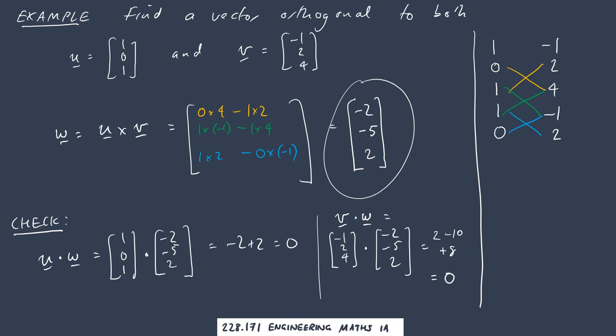This vector here is orthogonal to both of these. So for example, if u and v were direction vectors on a plane, w would be a good choice of a normal vector to that plane because it's at right angles to both.